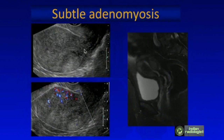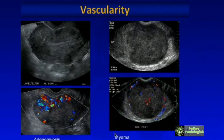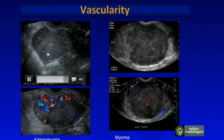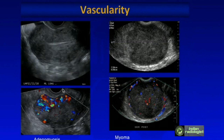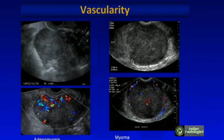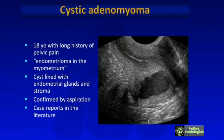Here is a more subtle case showing asymmetric thickening of the myometrium with echogenic areas. You can see the penetrating vessels. To contrast the vascularity of adenomyosis — penetrating vessels in the myometrium — versus myoma, where vascularity is displayed surrounding the lesion.